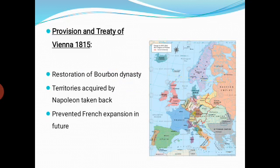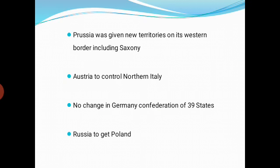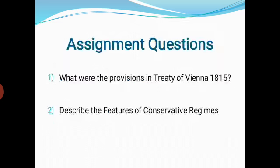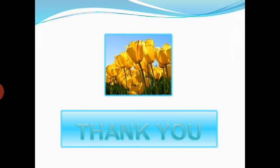Today we have learned about the provisions of the Treaty of Vienna 1815 and the features of conservatism — autocratic rule, no tolerance to criticism and dissent, censorship, and no questioning about the government. On the basis of today's content, two important questions are given as assignment questions. You have to write the answers to these questions. The remaining part of this lesson will be covered in the next online session. Thank you very much.